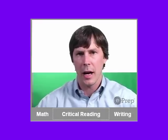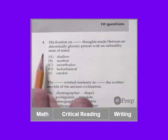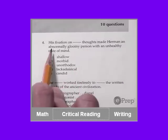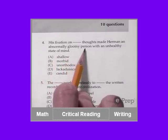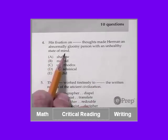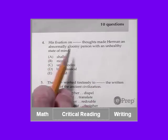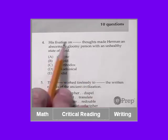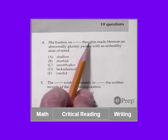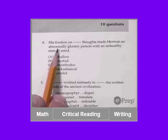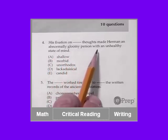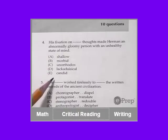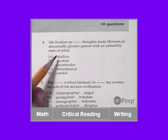This is question four. Let's take our time and do it together. His fixation on blank thoughts made Herman an abnormally gloomy person with an unhealthy state of mind. Try to get an understanding of what's going on. There's somebody named Herman and he has a fixation on some kind of thoughts, and that fixation makes him an abnormally gloomy person with an unhealthy state of mind. What we're going to do on this one is we're going to just quickly go through the answer choices and we're going to define them very quickly.